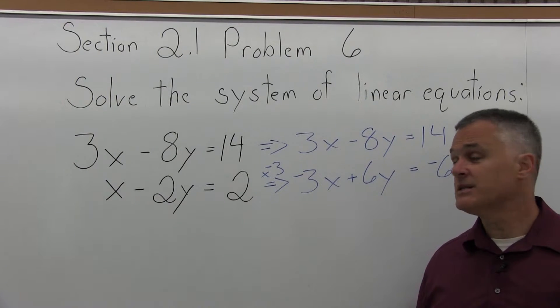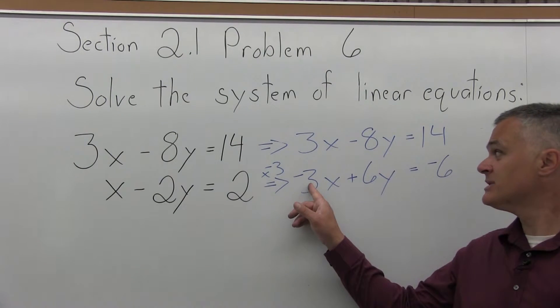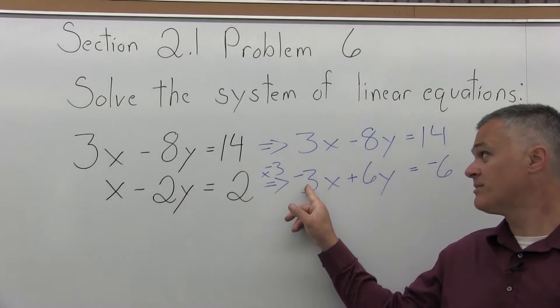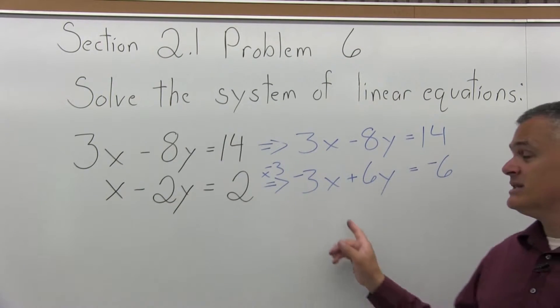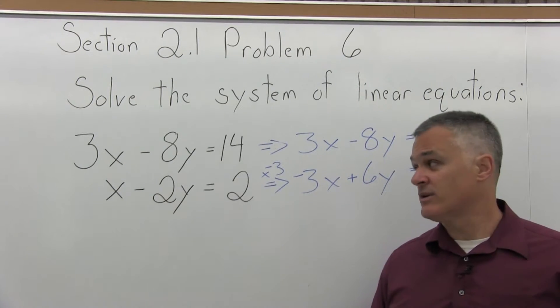Now step one is complete. One of my variables has the same number in front but with opposite signs. I have positive 3x and negative 3x. So, step two is add the equations together to cancel one of the variables.